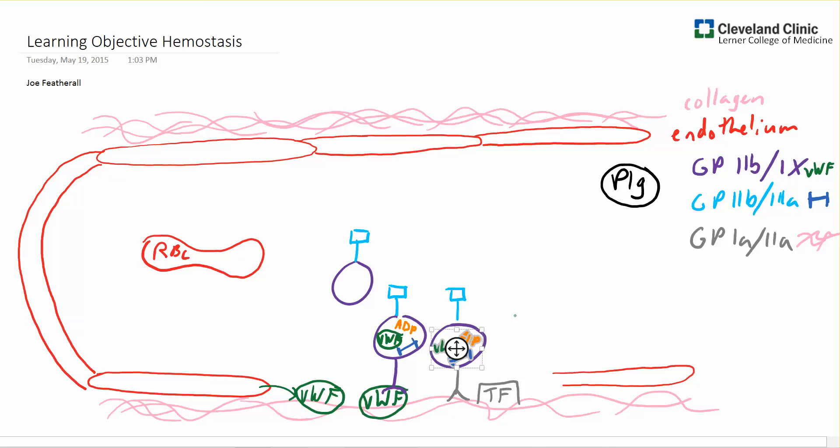When they adhere, these receptors also cause a signaling cascade to occur inside the platelet. And this causes some significant changes to the platelet. First of all, the platelet changes its shape, expanding its surface area and becoming very irregular.